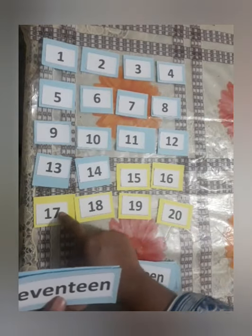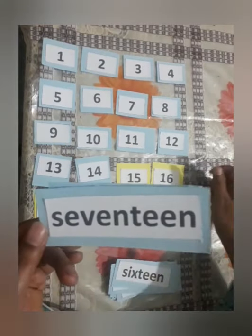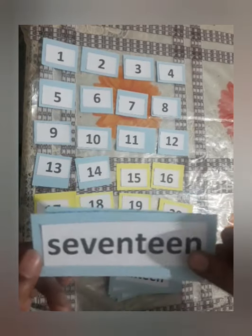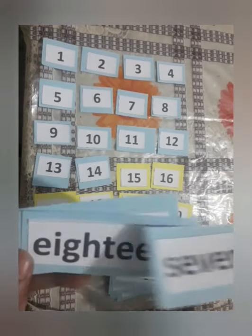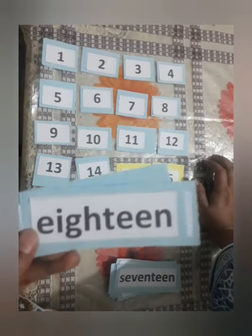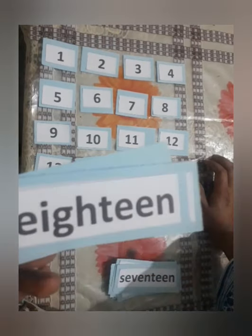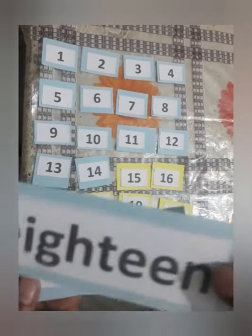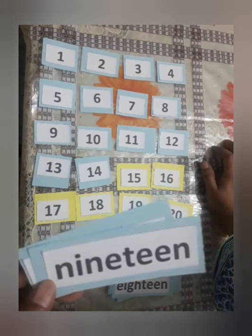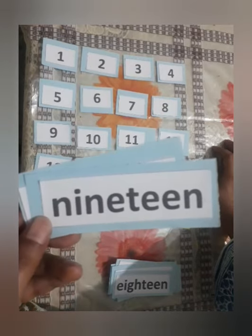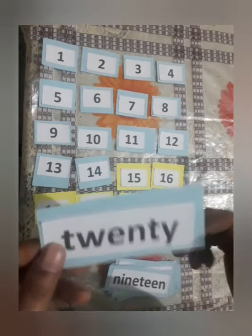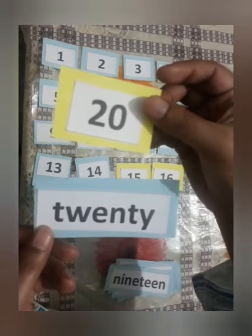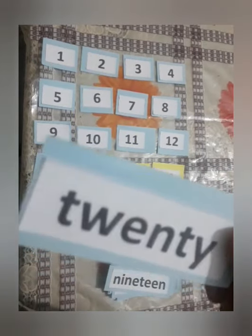And then we have number 17: S, E, V, E, N, T, E, E, N — Seventeen. And after 17, we have Eighteen: E, I, G, H, T, E, E, N — Eighteen. Note: we don't write double T in 18. Nineteen: N, I, N, E, T, E, E, N — Nineteen. And the last number is 20: T, W, E, N, T, Y — Twenty.